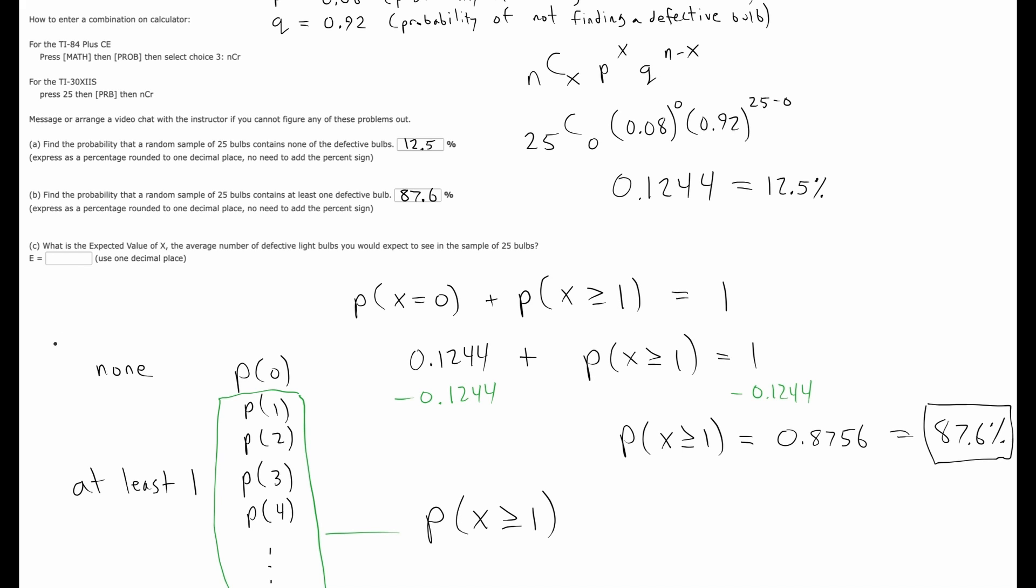Alright, then what is the expected value of X? That would be what is the average number of defective light bulbs you would expect to get out of a sample of 25 bulbs. So for this particular problem, the expected value of a probability distribution is going to be the mean of it, which is given by N times P. That's the formula for that.